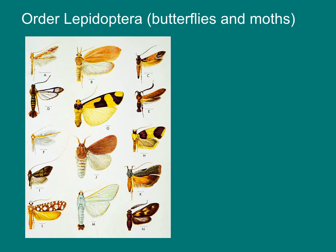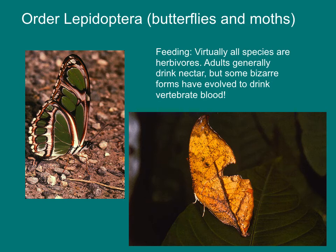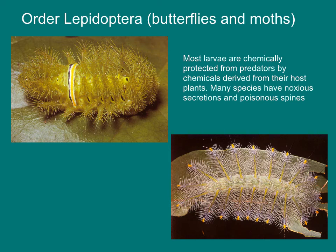Butterflies and moths are an important insect order called Lepidoptera. All Lepidoptera have scales over their body and wings — scales are just highly modified setae, but they can be brightly colored to give these insects distinctive color patterns. Night-flying Lepidoptera are called moths, whereas day-flying Lepidoptera are called butterflies. Virtually all Lepidoptera are herbivores. Adults generally drink nectar, but some bizarre forms have evolved to drink vertebrate blood and even the tears of large mammals. The larvae are chemically protected from predators by toxic chemicals derived from their host plants, and many species have noxious secretions and poisonous spines.